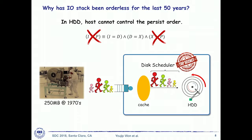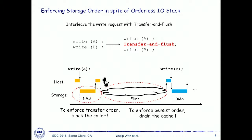In an orderless I/O stack, applications must still enforce storage order, so they employ transfer-and-flush. To ensure write-A reaches disk before write-B, the application sends the request, waits for DMA transfer to the write-back cache to complete, then sends a flush command, waits for it to complete, and only then sends the next command. This is how modern applications enforce storage order among write requests. Isn't that a disaster?